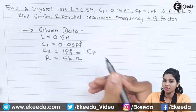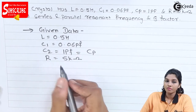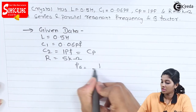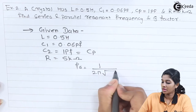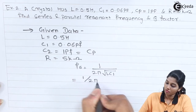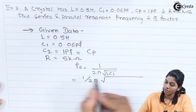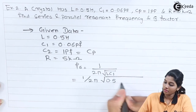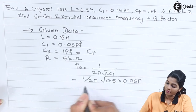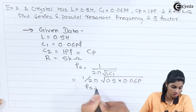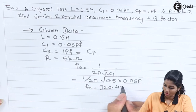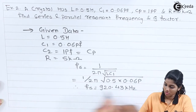First, find out series resonant frequency Fs by using the formula 1 upon 2π times the square root of L·C1, which equals 1 upon 2π times the square root of 0.5 into 0.06 pF. We get Fs equals 920.43 kHz.